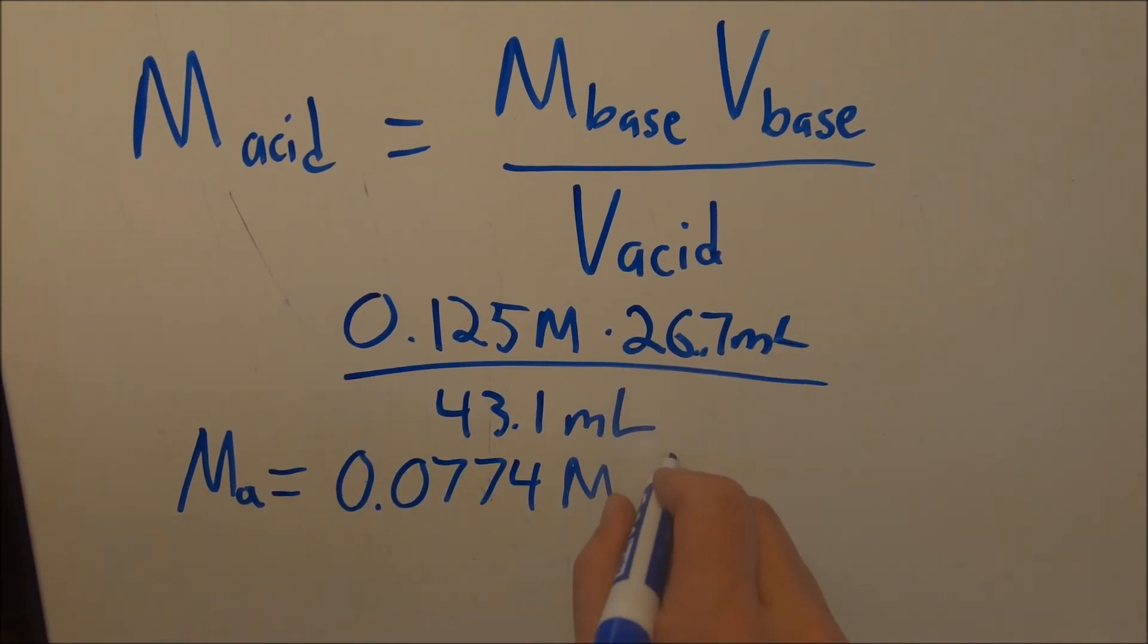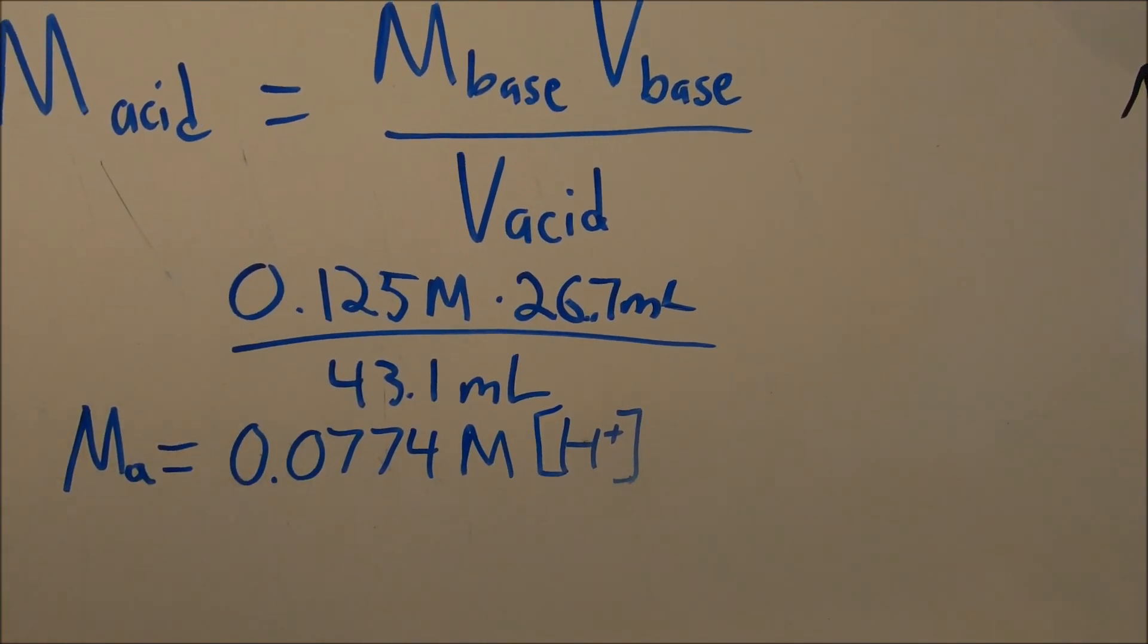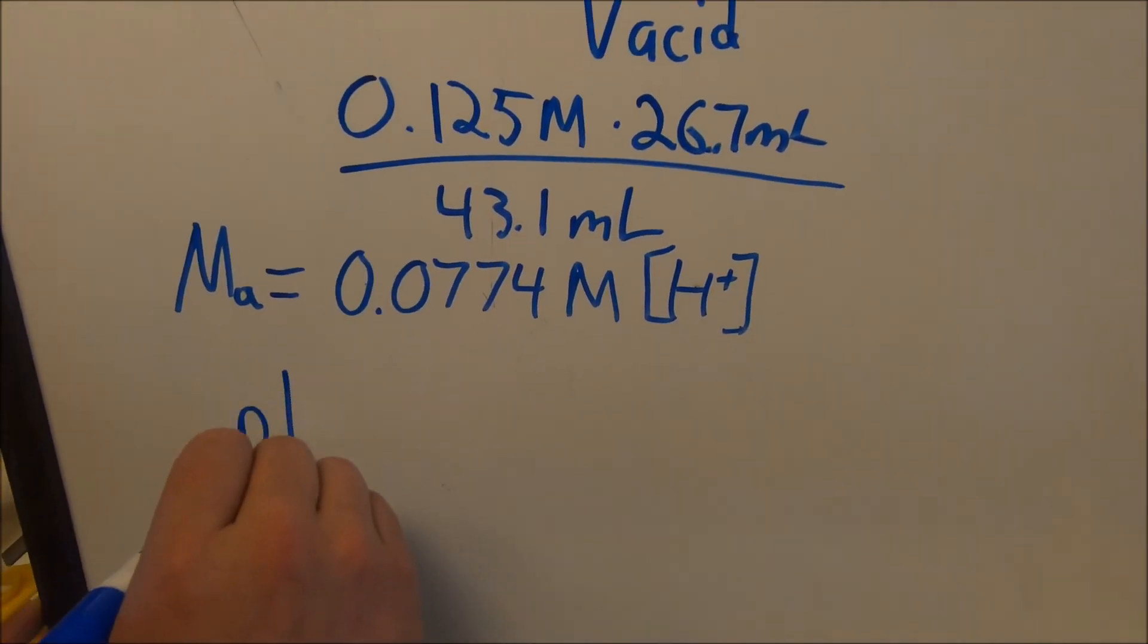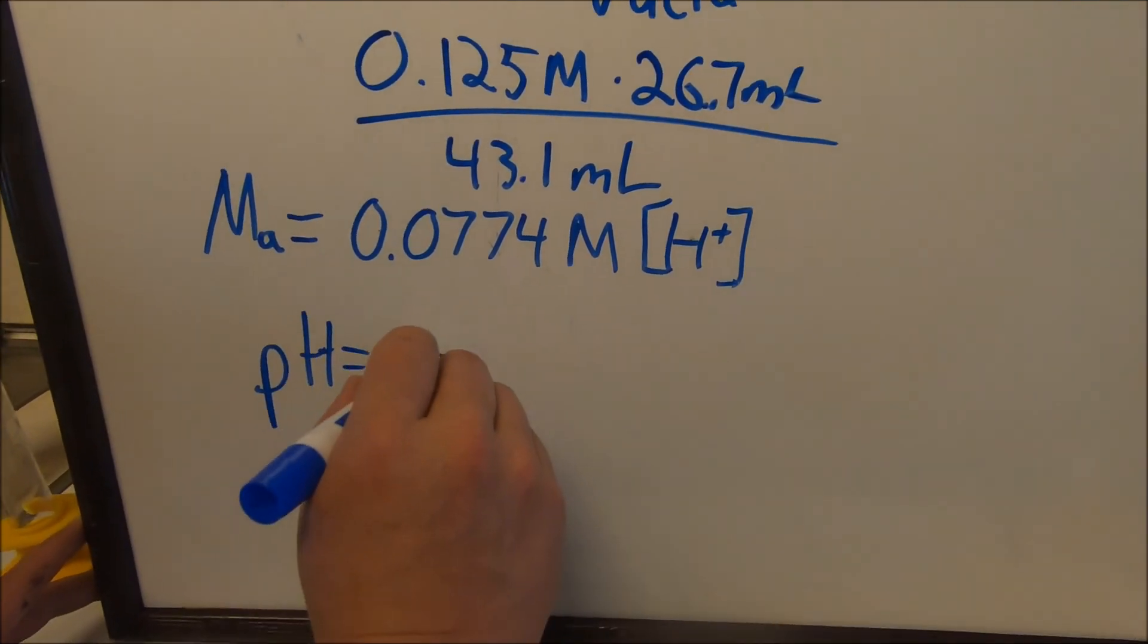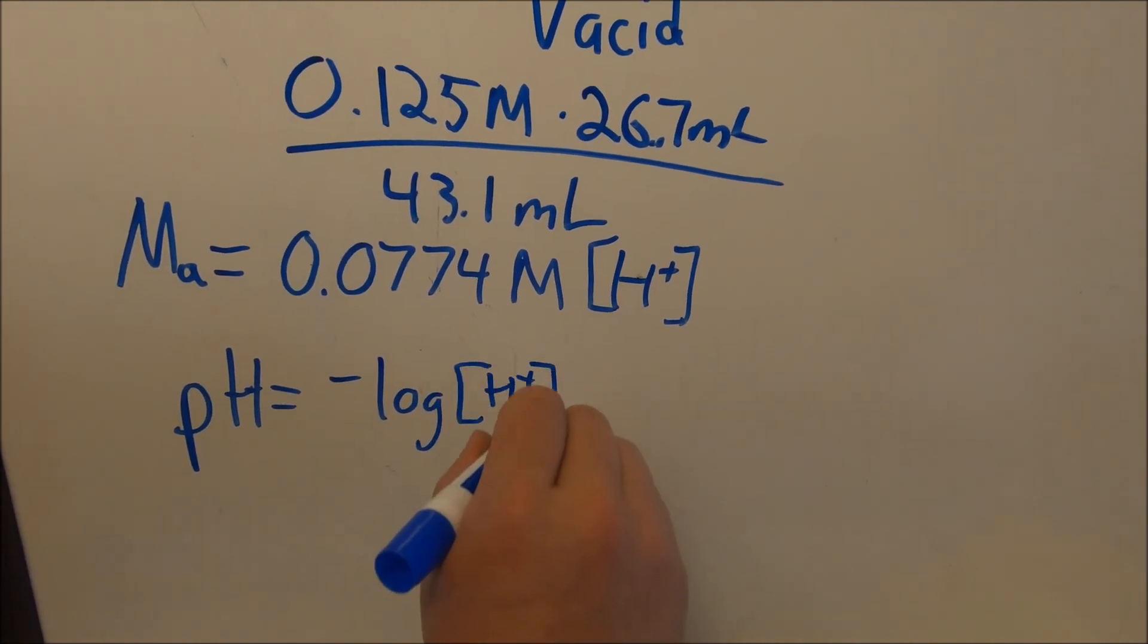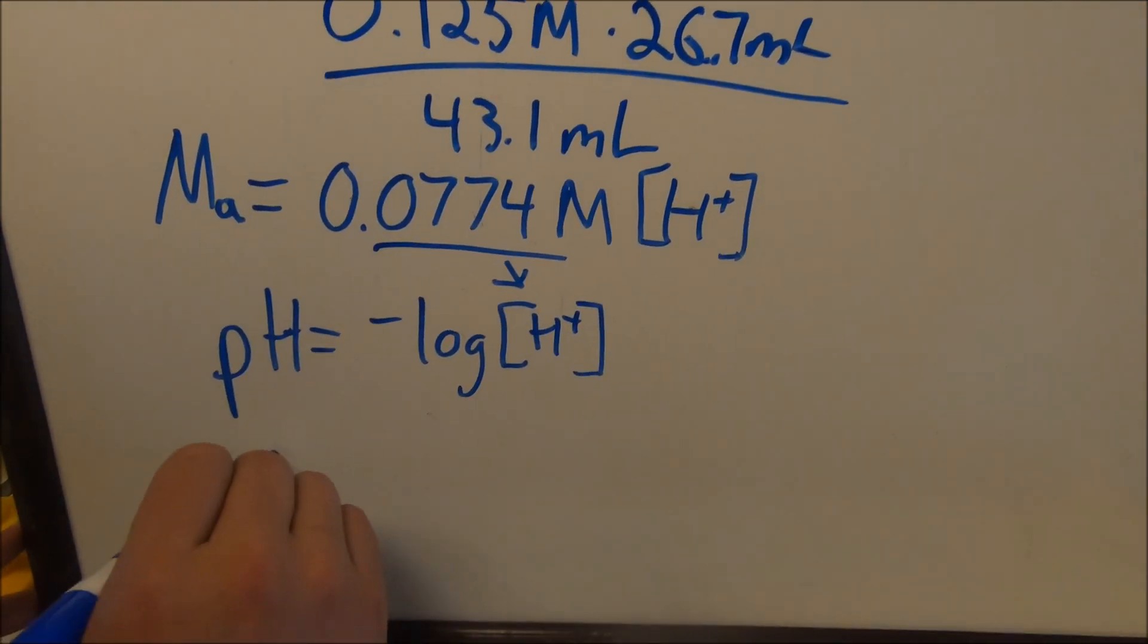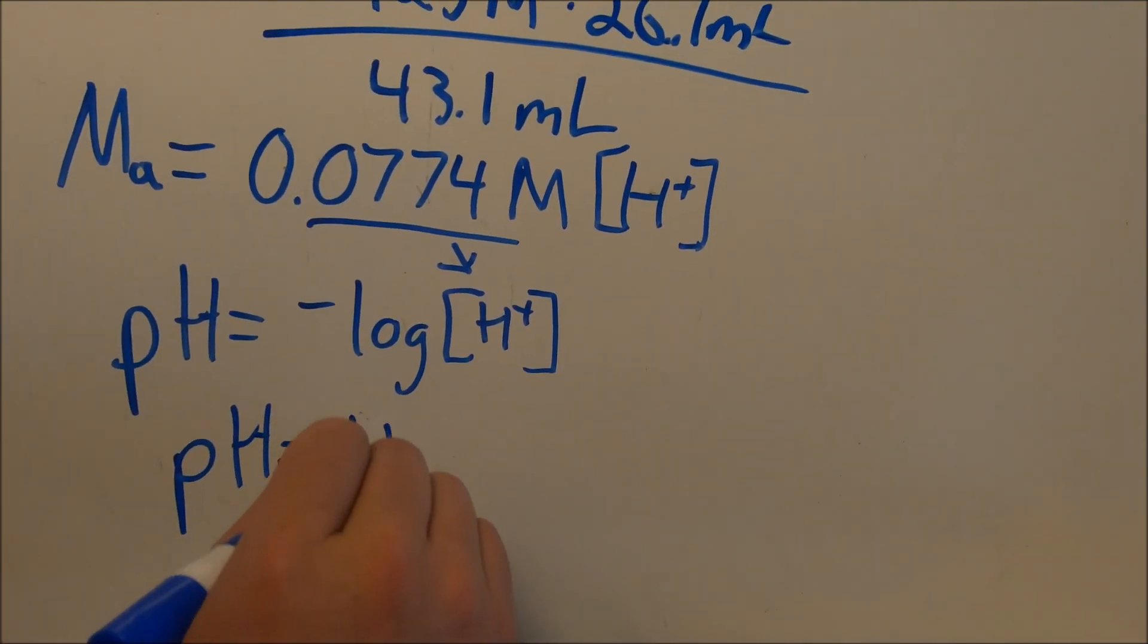Which would be our H+ concentration, how much or what the molarity was of that. Now knowing that our equation pH is equal to the negative log of the hydrogen concentration, if we plug that in, we end up with a pH calculation-wise of about 1.11.